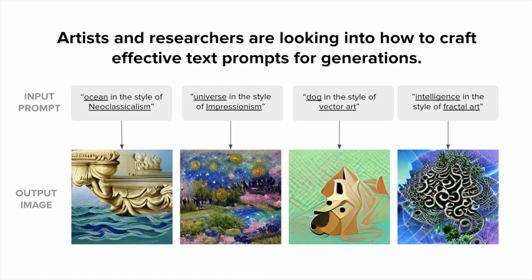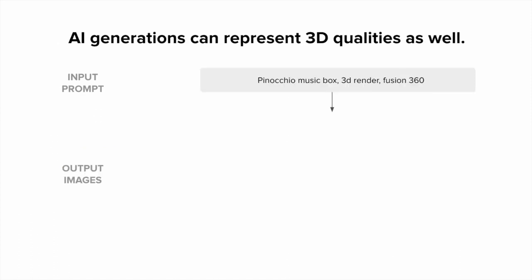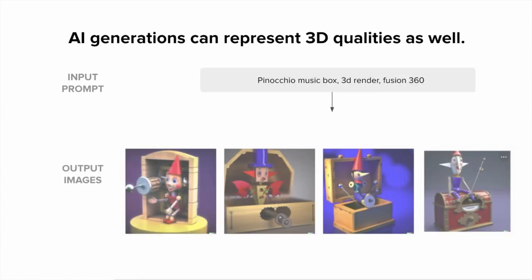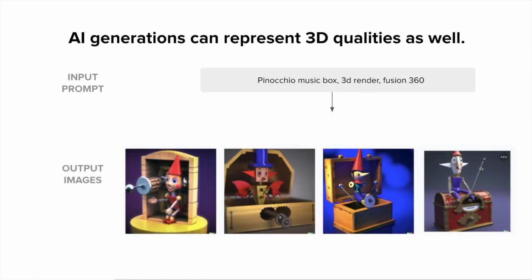These AI generations are not limited to the 2D domain—they can also represent 3D qualities. For example, if I type in a prompt like 'Pinocchio on a music box, 3D render, Fusion 360,' we can see that these models are capable of expressing qualities from CGI and 3D renders, including lighting, shading, and perspective.